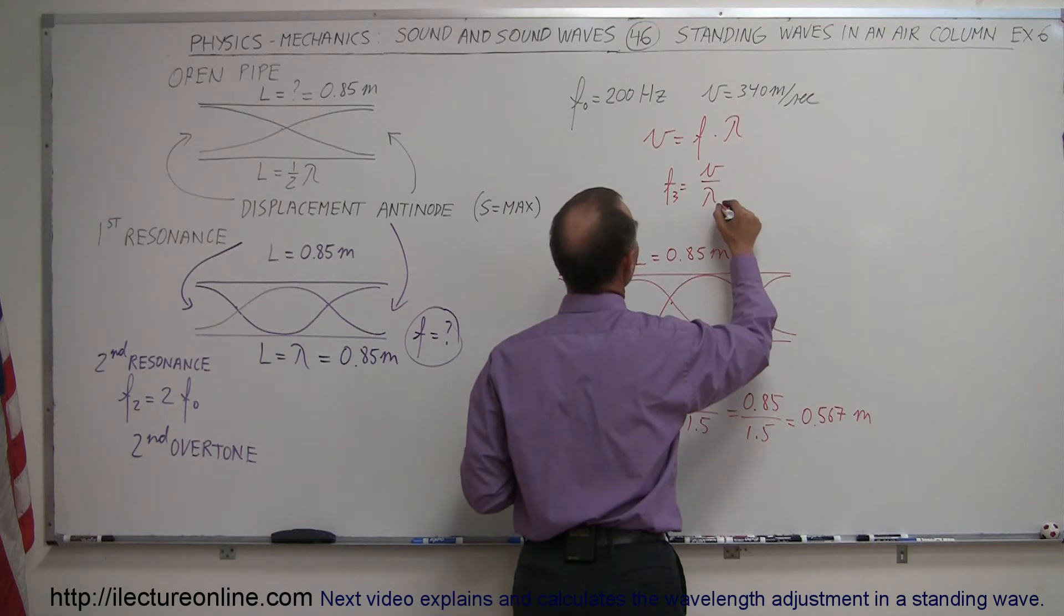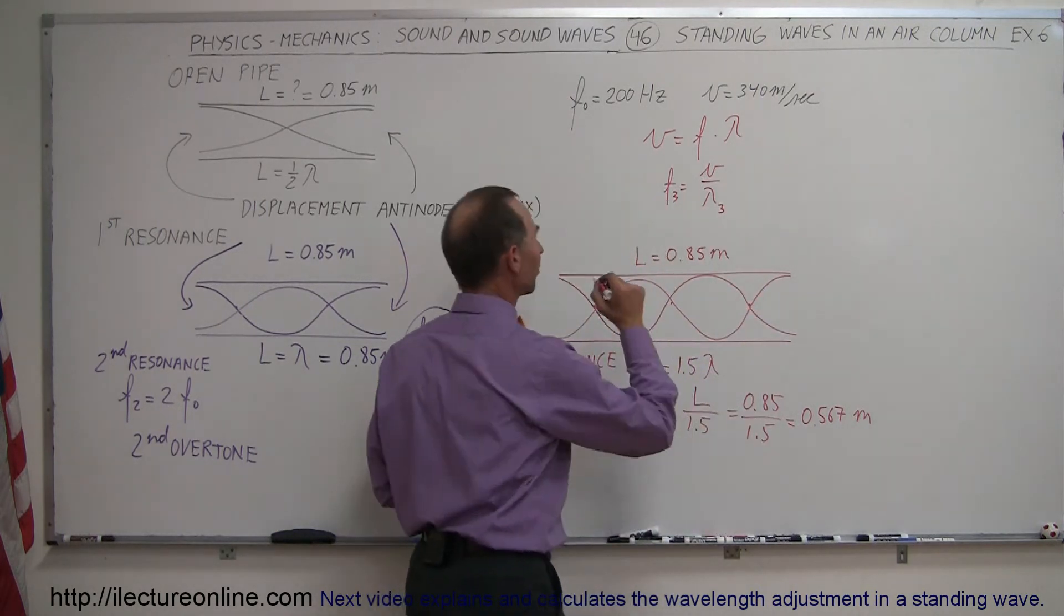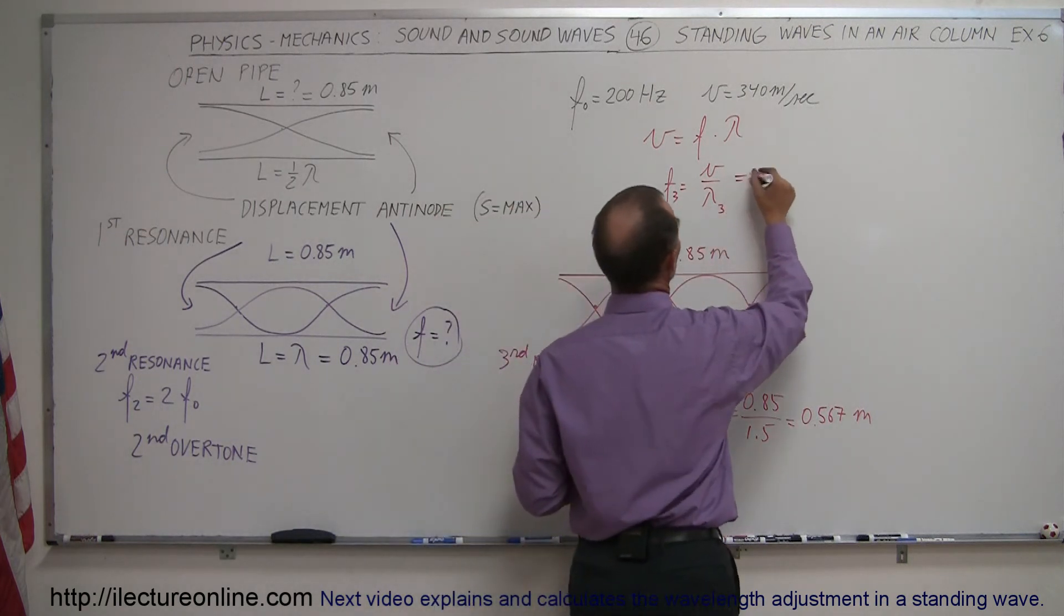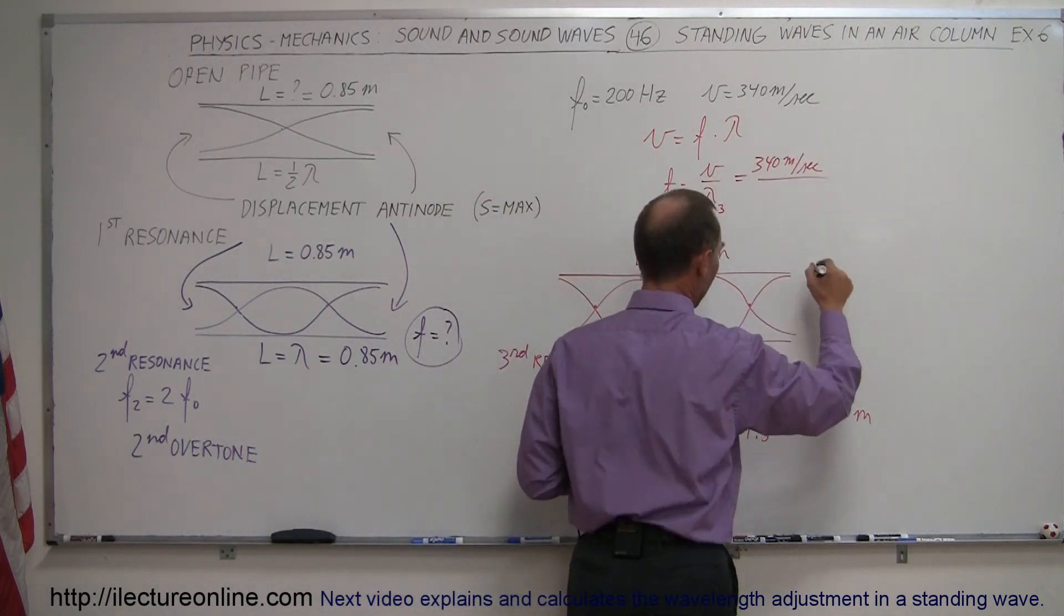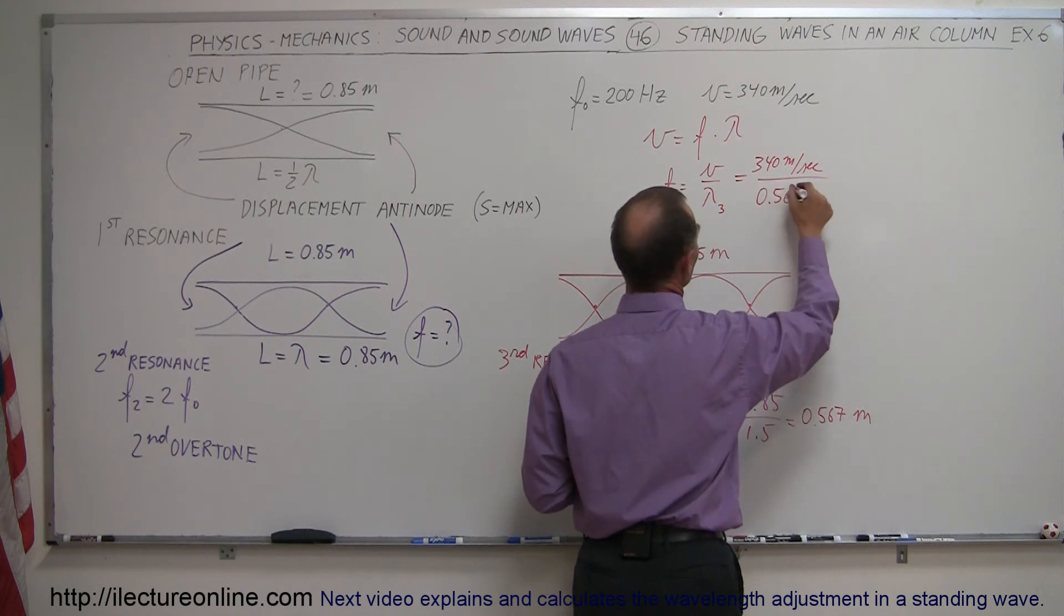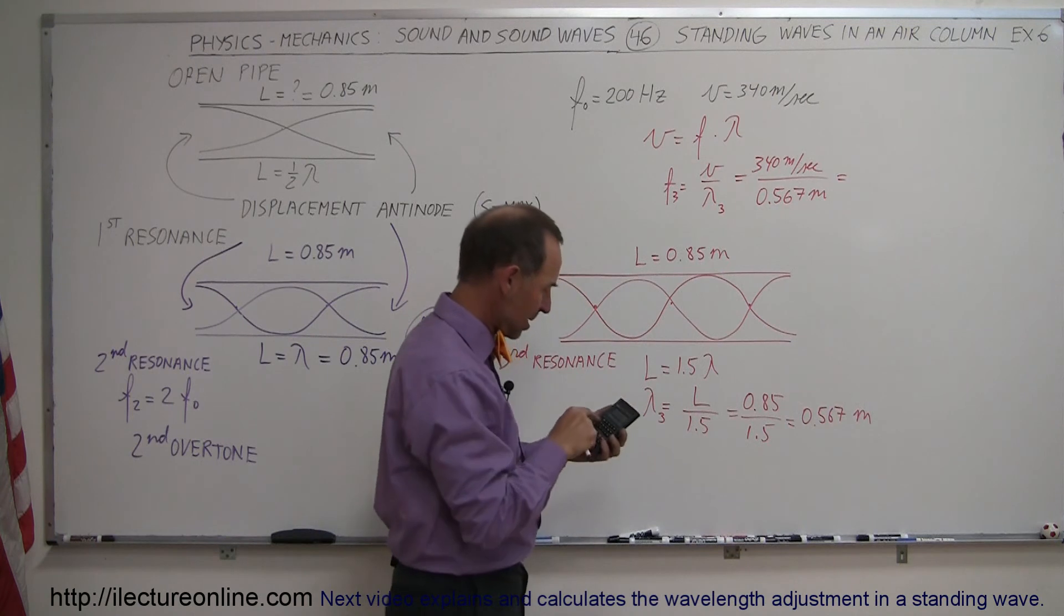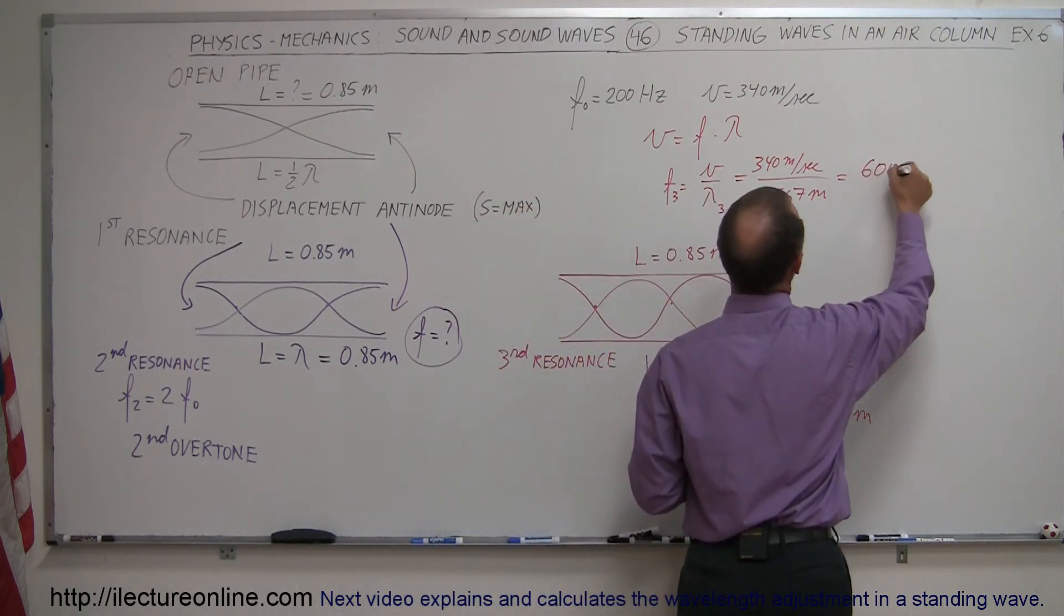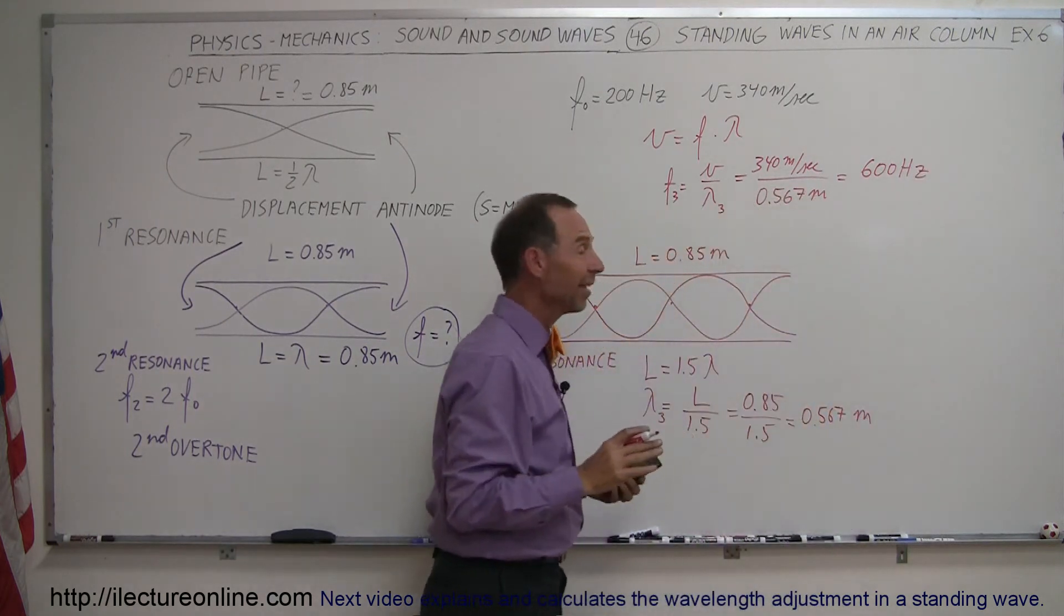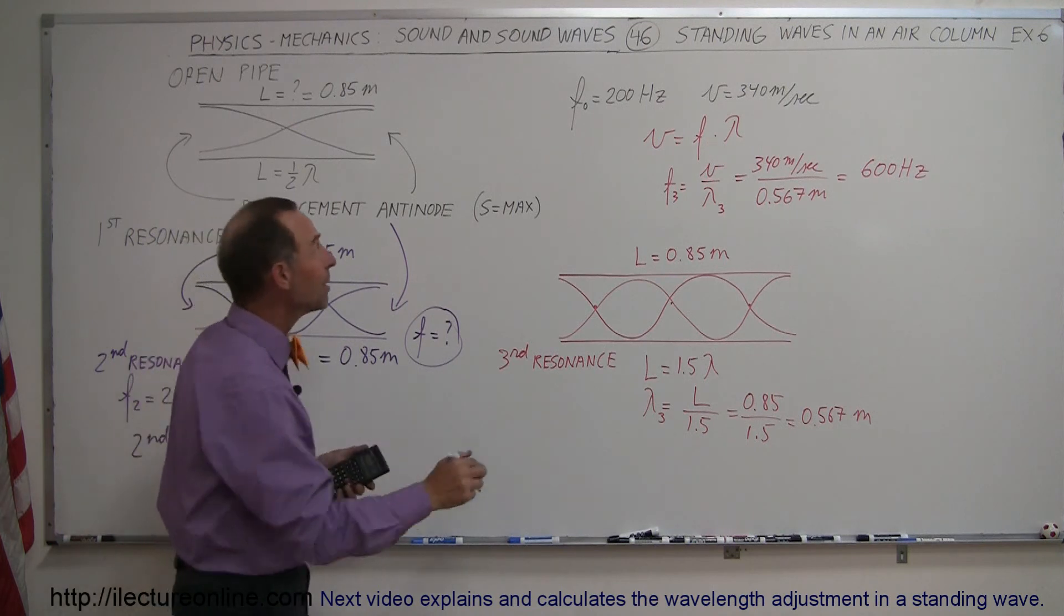...is equal to velocity divided by the wavelength of that particular situation. So we'll call that lambda sub 3, and this is equal to 340 meters per second divided by 0.567 meters, and if I'm not mistaken, sure enough, that would be equal to 600 hertz exactly.